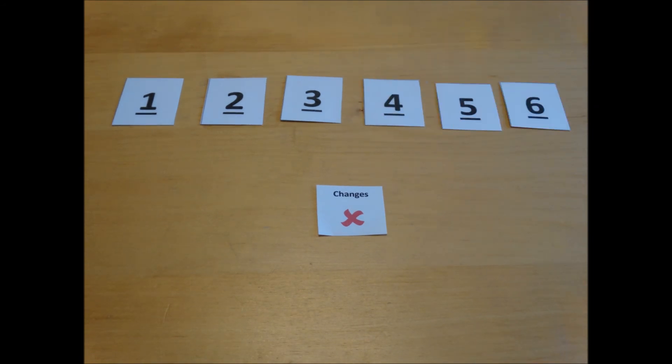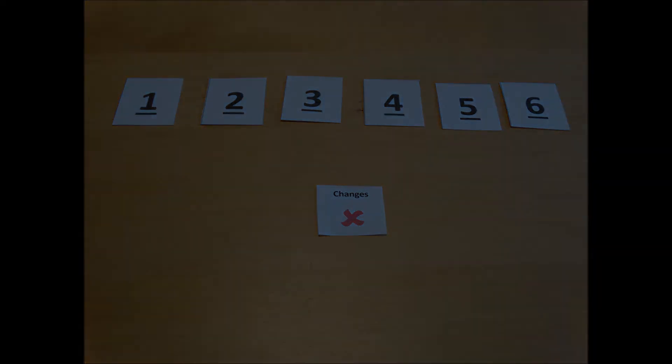It is only once we've made a complete pass of the entire array and no changes have been made that we can be sure they're all in the correct order. And then we can end our bubble sort.